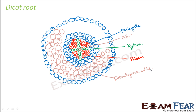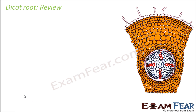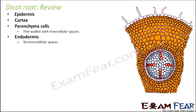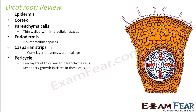The main difference between dicot root and monocot root is in the pith, xylem, and phloem. The arrangement of xylem and phloem is different, and the pith is also smaller compared to the monocot root where it was quite large. Now for a quick review: a dicot root has epidermis, cortex made up of parenchyma cells, and endodermis with casparian strips.